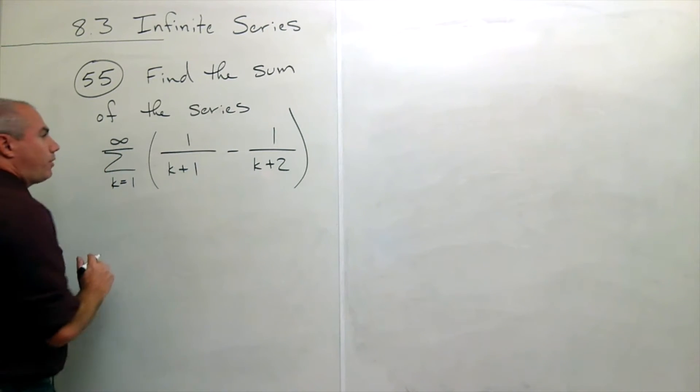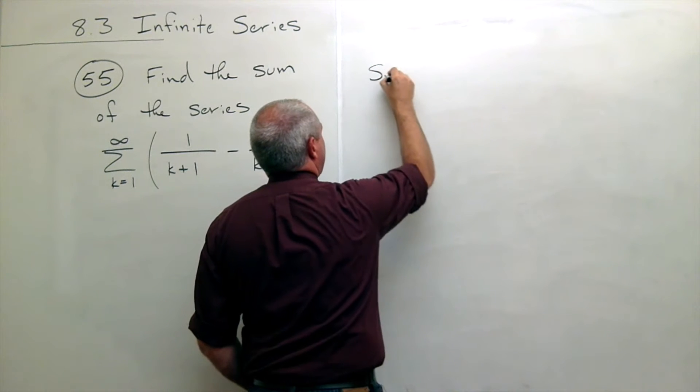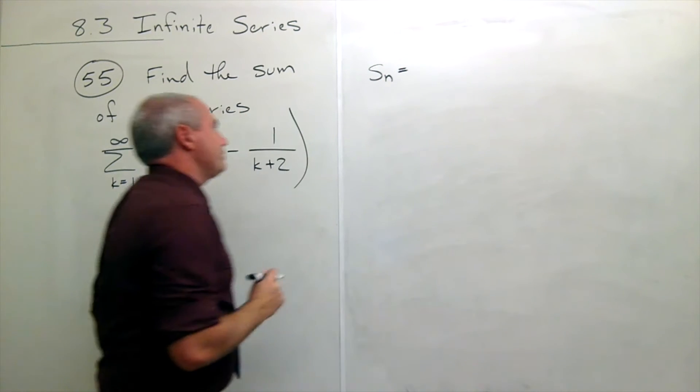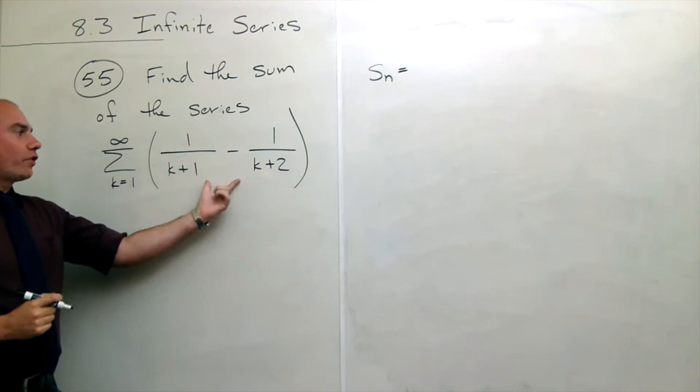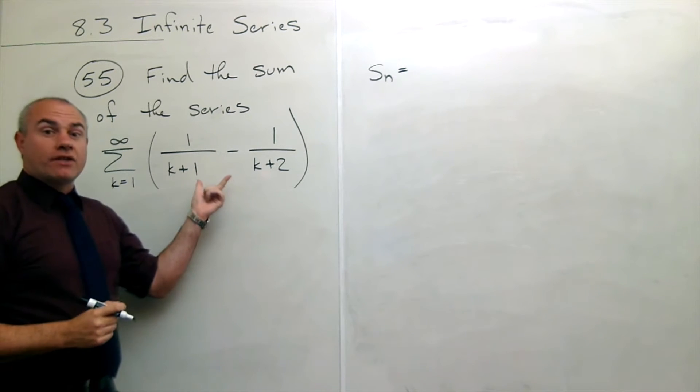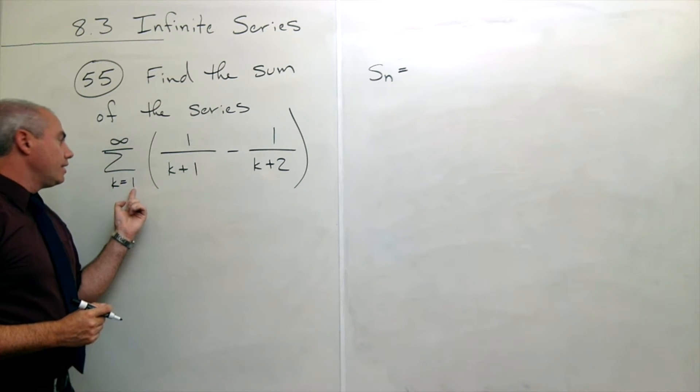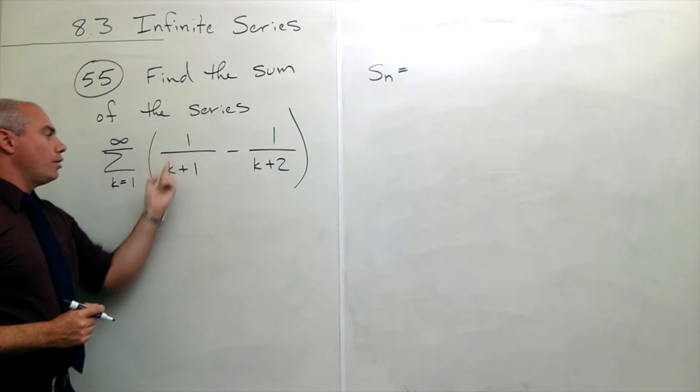When I say take the nth partial sum, maybe let's write it up here, I'm talking about s sub n. And what I'm saying is, what if I added up the first n of these guys? Okay, so what's the first one? So if I plugged in that k is 1.